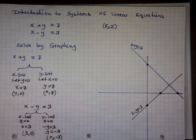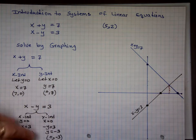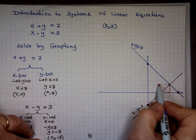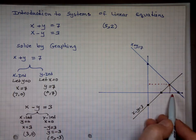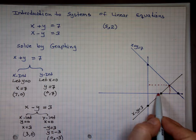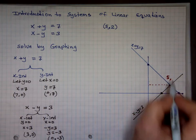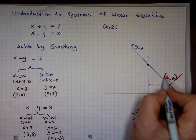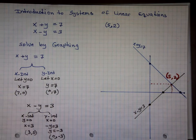This is x minus y equals 3. The solution is where the two lines intersect each other. What is the x value? And what is the y value? That's where they cross each other at this point. So x is 5, and the y value is 2. That's the answer we're looking for — the solution is (5, 2).